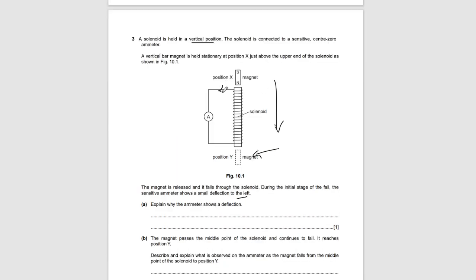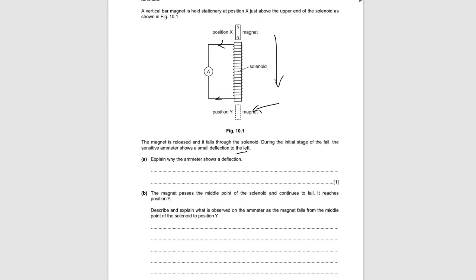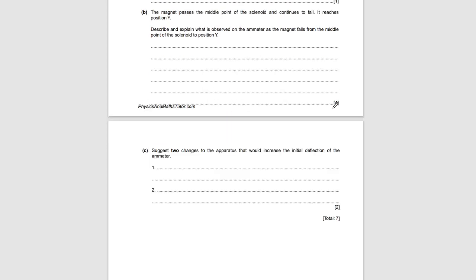As the magnet passes the middle point of the solenoid and continues to fall to position Y, describe what you observe on the ammeter. The meter deflects in the opposite direction — it shifts to the right. The deflection is also greater because the magnet is moving faster as it falls, so more field lines are cut per second, inducing a larger EMF and therefore a larger current.